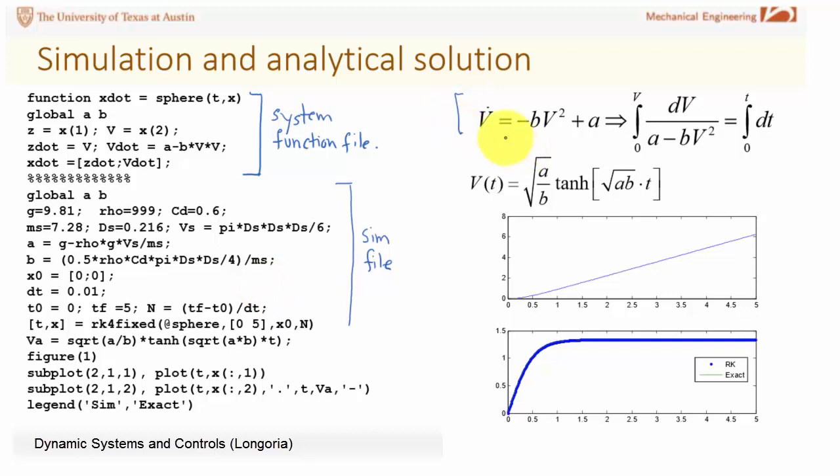I've redefined some of the parameters in the original differential equation. This is a nonlinear equation but it's first order and it's separable and I can integrate and from an integral table I can find the velocity in closed form so this is an exact solution. It's kind of nice to have this just to compare with a numerical result. Let me show you a few things about this simulation file, the system function file. Note I've set global a and b because I'm going to need those parameters.